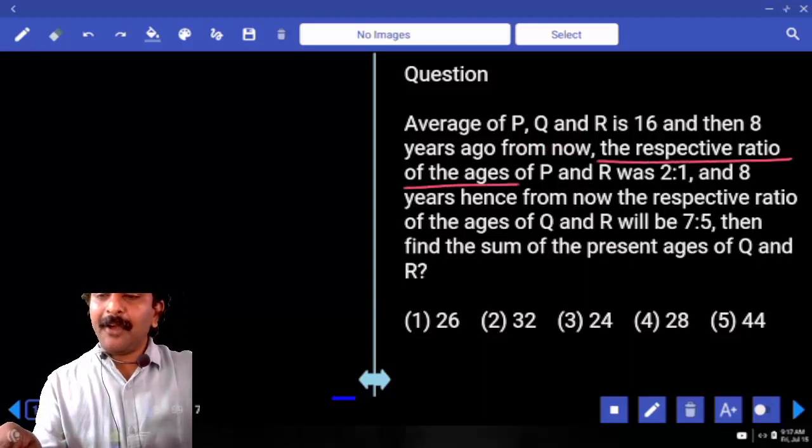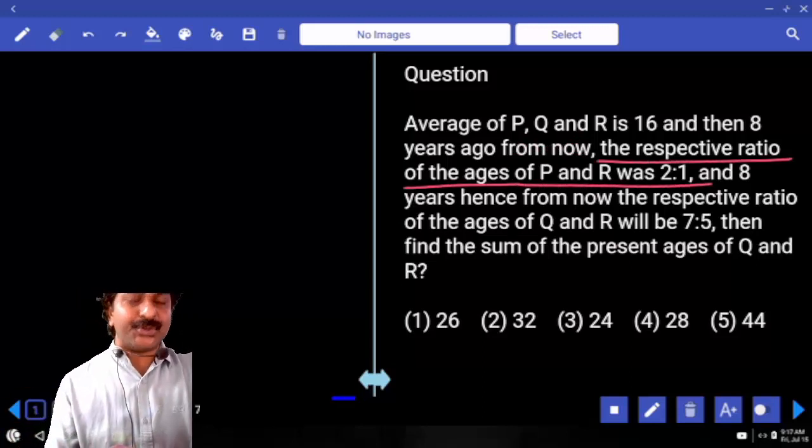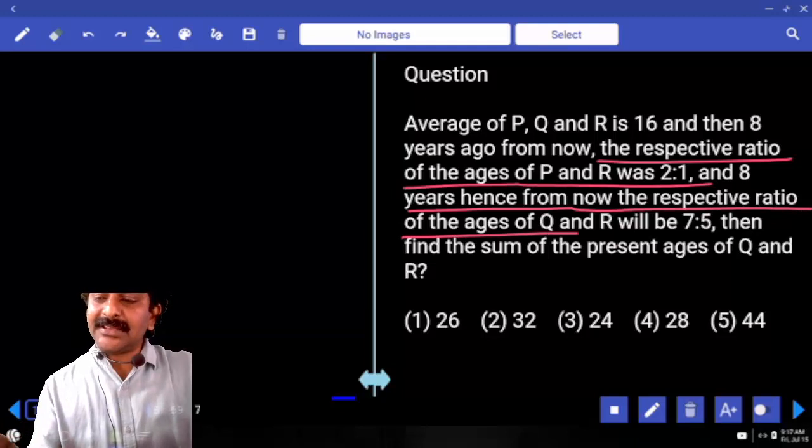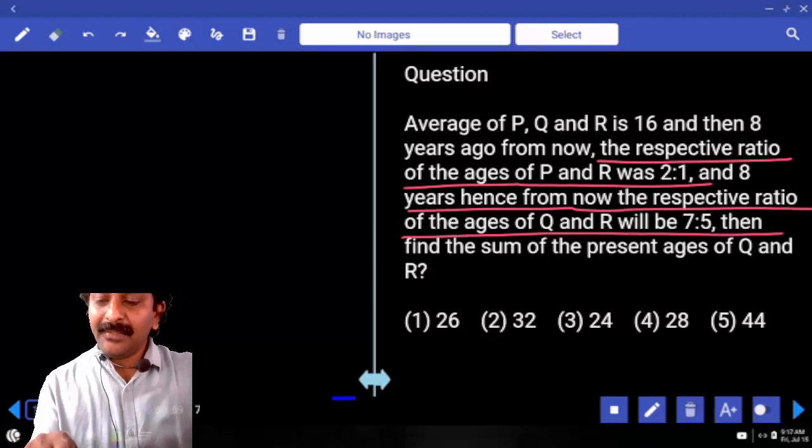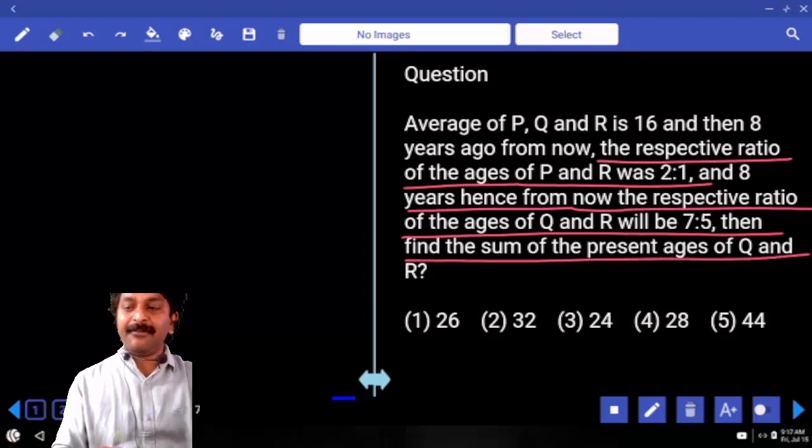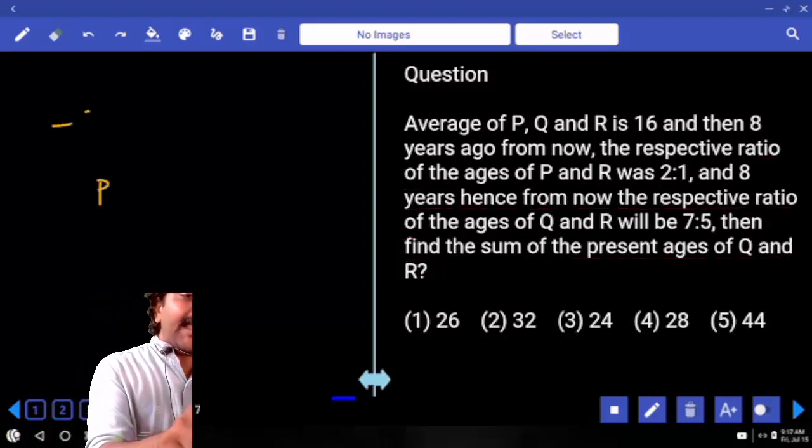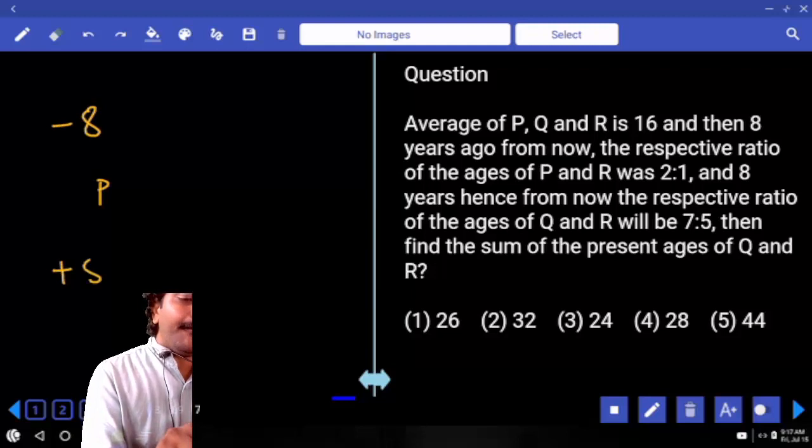The respective ratio of ages of P and R was 2 is to 1, and 8 years hence from now, the respective ratio of the ages of Q and R will be 7 is to 5. Then find the sum of present ages of Q and R. Present age, 8 years back, after 8 years.